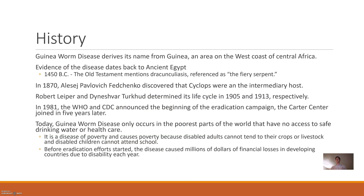The disease is named after an area of central Africa on the west coast called Guinea. It dates back to ancient Egypt — there is forensic evidence of an Egyptian pharaoh who had guinea worm disease. It's mentioned in the Old Testament as a fiery serpent. In 1870 it was discovered that the Cyclops was the intermediate host, and in 1905 the whole life cycle was fully described.